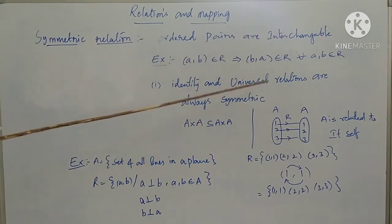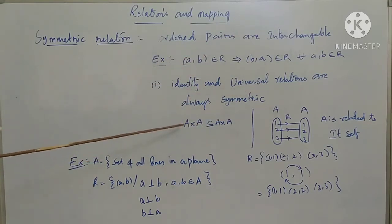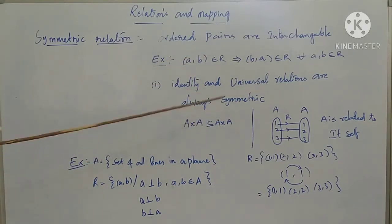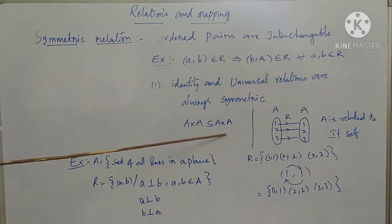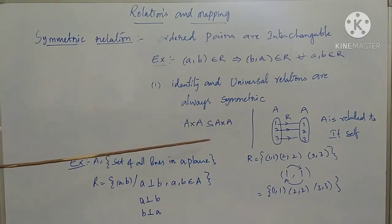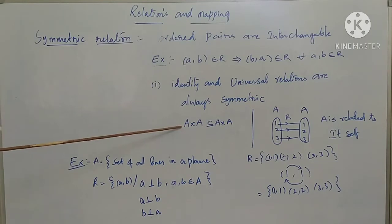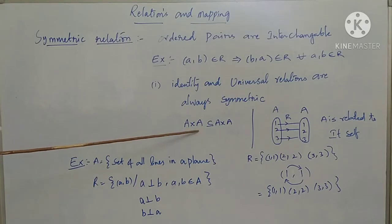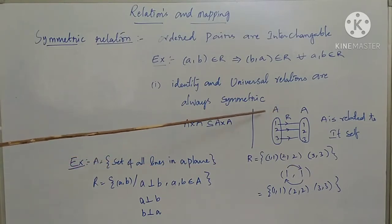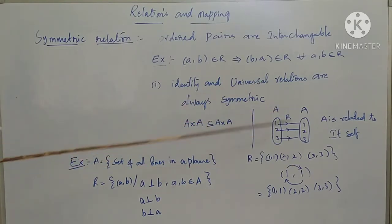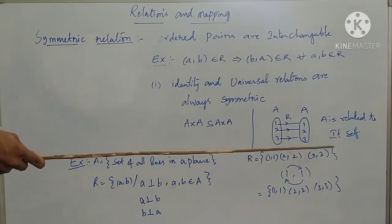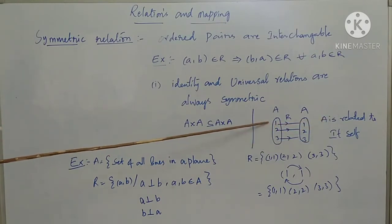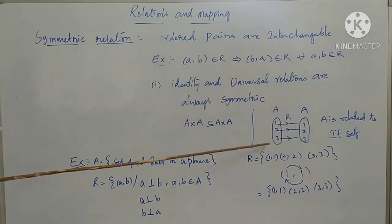What is a universal relation? If A cross A is a subset of A cross A, then A cross A is also a subset of A cross A — both relations superimpose, so the converse is possible. From the identity relation, A is related to itself; this type of relation is called an identity relation.